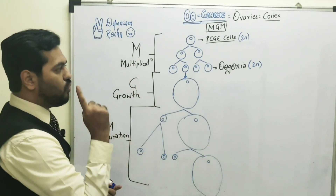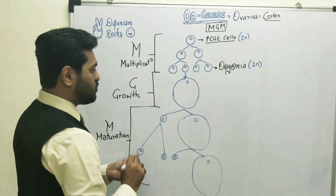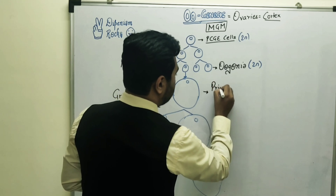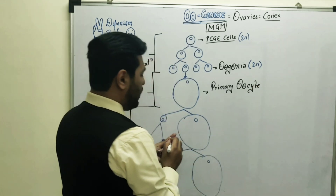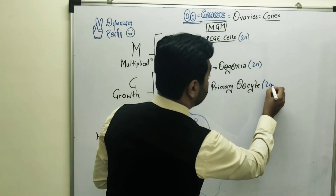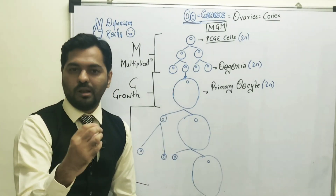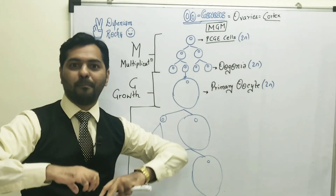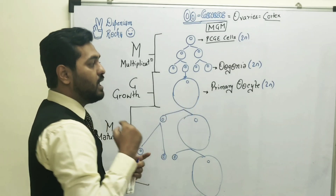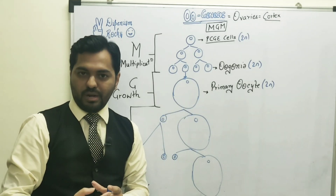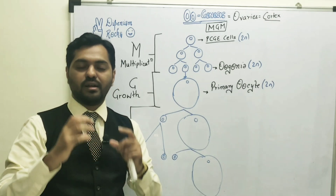Out of the oogonia, one oogonium grows in size through food absorption. This enlarged cell is known as the primary oocyte, which is diploid. When we draw the diagram and compare, the primary spermatocyte is very small whereas the primary oocyte is comparatively a larger cell, meaning it absorbs more food and the cytoplasmic content increases significantly.